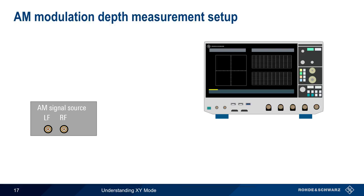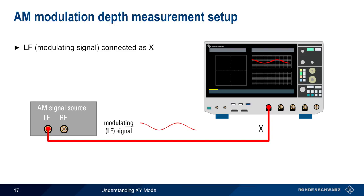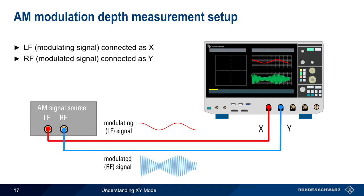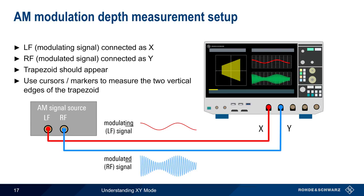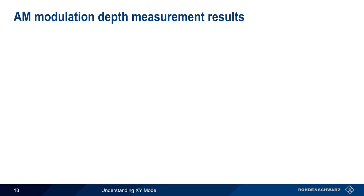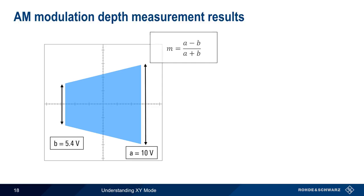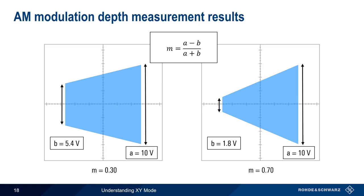Here is the setup for measuring AM modulation depth. The low-frequency modulating signal is connected to the X channel input, and the higher or RF frequency modulated signal is connected to the Y channel input. If configured properly, a trapezoid should appear on the XY display. Markers or cursors can then be used to measure the two vertical edges of the trapezoid, and the values are used to calculate modulation index or depth. In the first example, we measure the vertical edges of the trapezoid and get a modulation index of 0.3, or a modulation depth of 30%. In the second example, we have the same length for A but a much shorter length for B, giving a modulation index of 0.7, which corresponds to a modulation depth of 70%.